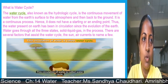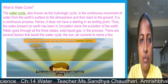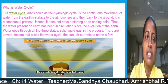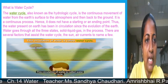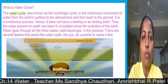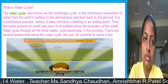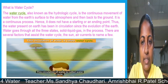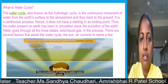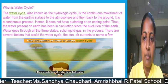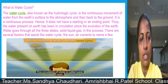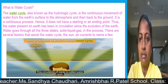The water cycle, also known as the hydrologic cycle, is a continuous movement of water from the earth's surface to the atmosphere and back to the ground. It is a continuous process like a chain and does not have a starting or ending point. Water goes through all three states — solid, liquid, and gas. Several factors assist the water cycle: the sun, air currents, evaporation, condensation, transpiration, and precipitation. The water cycle plays a very important role in the nature and ecosystem.